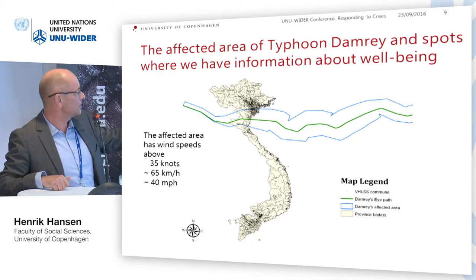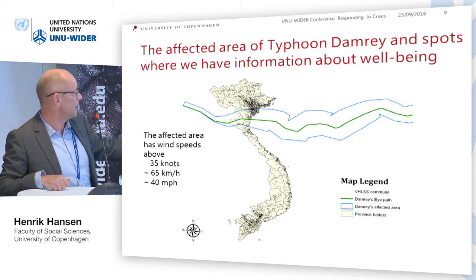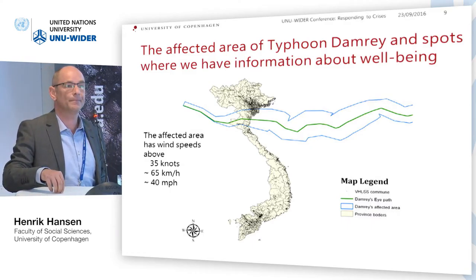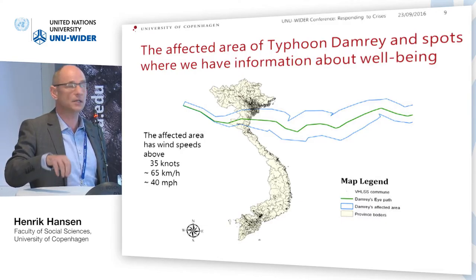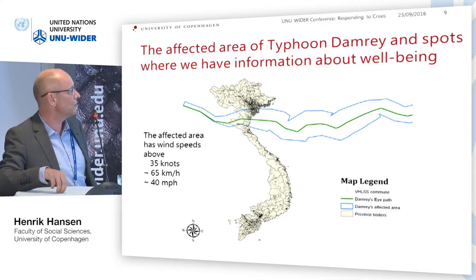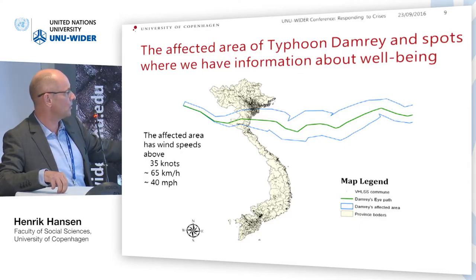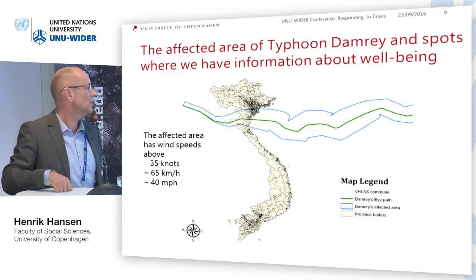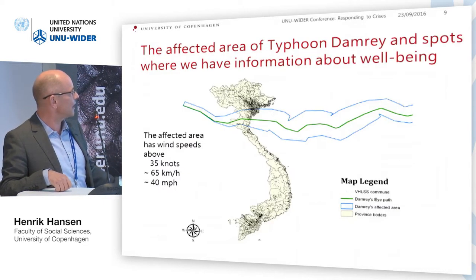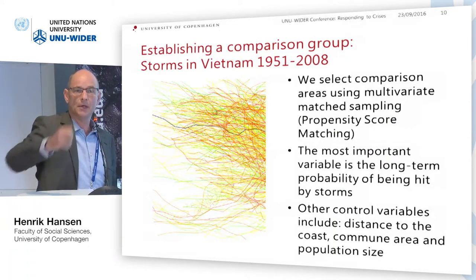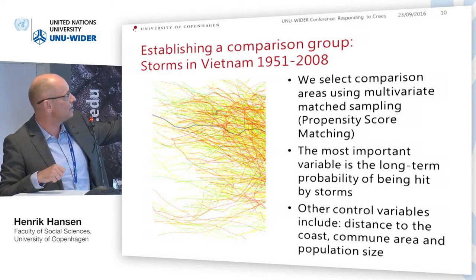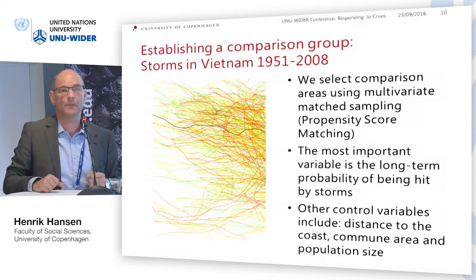We have data from household surveys in 2004, 2006, and 2008 for all those commune locations — before and after the storm. To find a comparison group, we go back in time and look at storms in Vietnam from 1951 to 2008. Each trajectory represents a storm, ranging from tropical depressions to category one through five events.